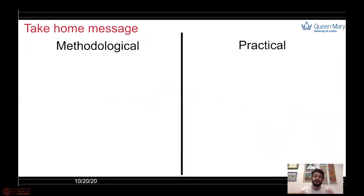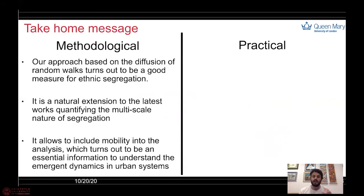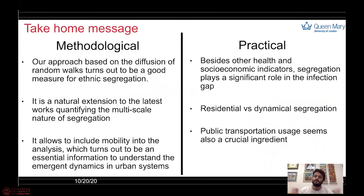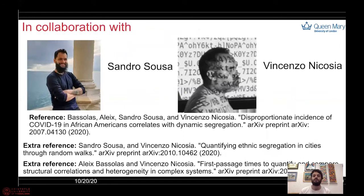Going to the final take-home message, this work shows that the methodology based on the movement of random walks in colored graphs is pretty useful in quantifying ethnic segregation in cities. And from a practical perspective, we have shown that this segregation seems to be connected to the infection gap suffered by African-American communities. This work was done in collaboration with Sandra Sosa and Vincenzo Nicosia.